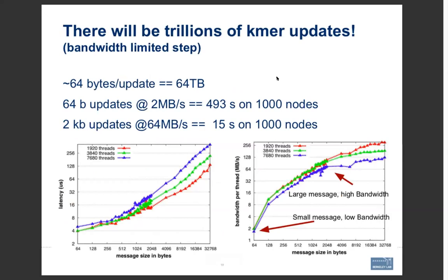But there are really trillions of KMERs in some of these data sets, and that one step of doing fine-grained inserts is quite rate-limiting. If we're trying to make a high-performance application, we'd be leaving a lot of performance on the table if every one of those trillion updates sent a message over the network. Small messages have low bandwidth, but large messages have higher bandwidth. If we aggregate insertions from 64 bytes per message up to maybe two kilobytes, the network transfer time could drop from about 500 seconds to 15 seconds.